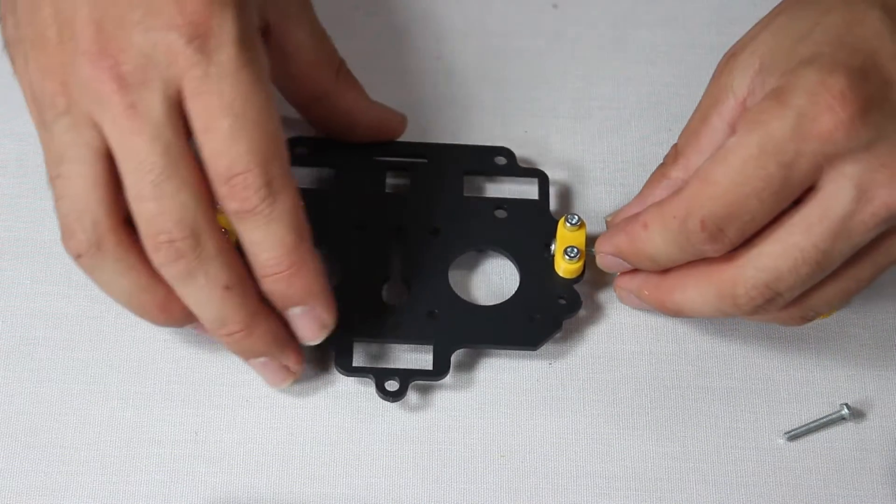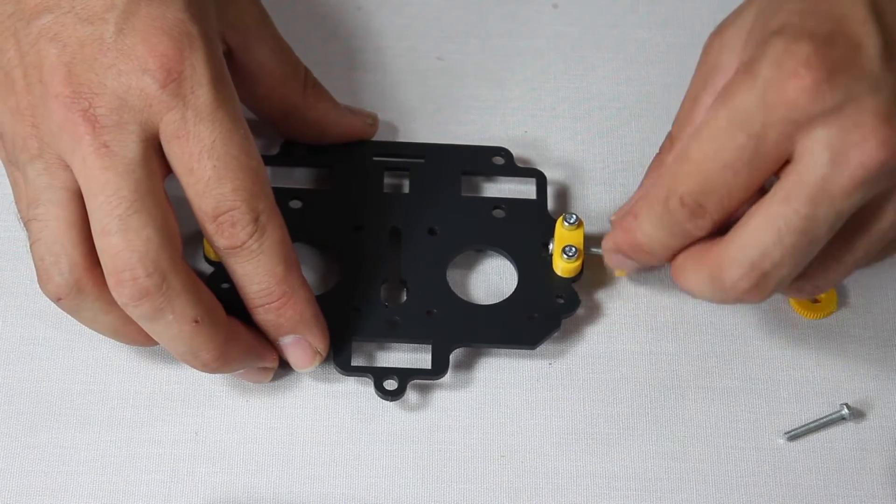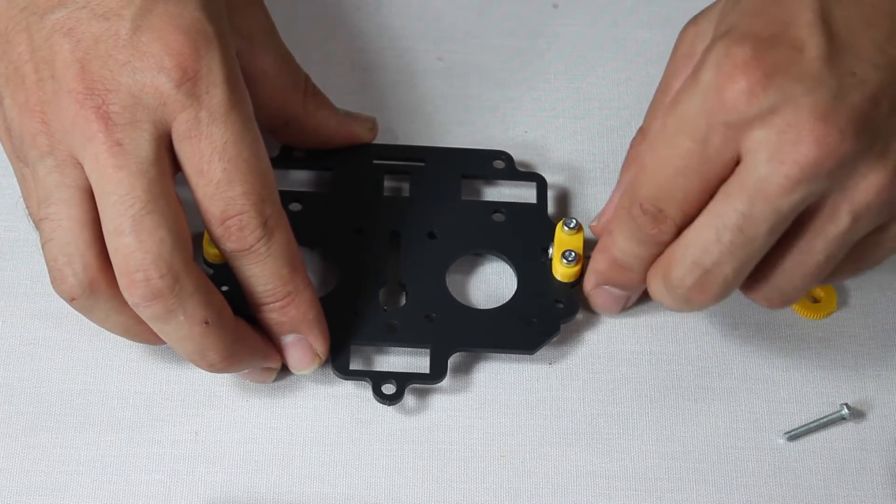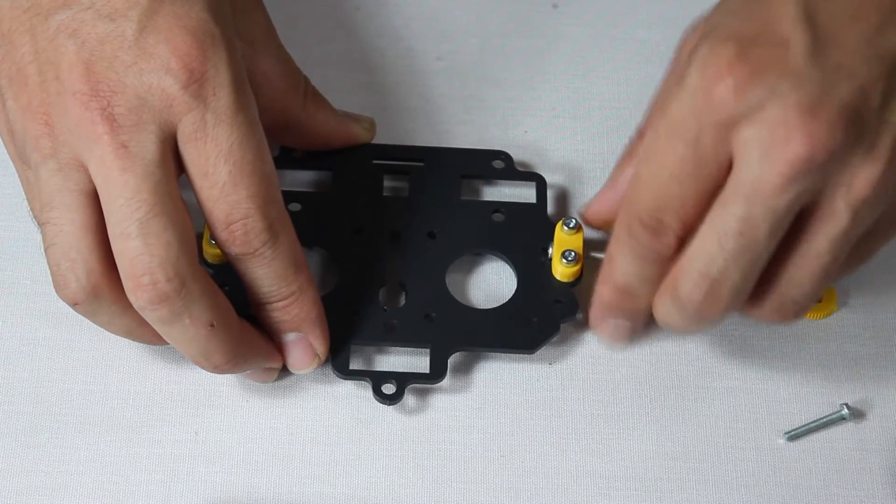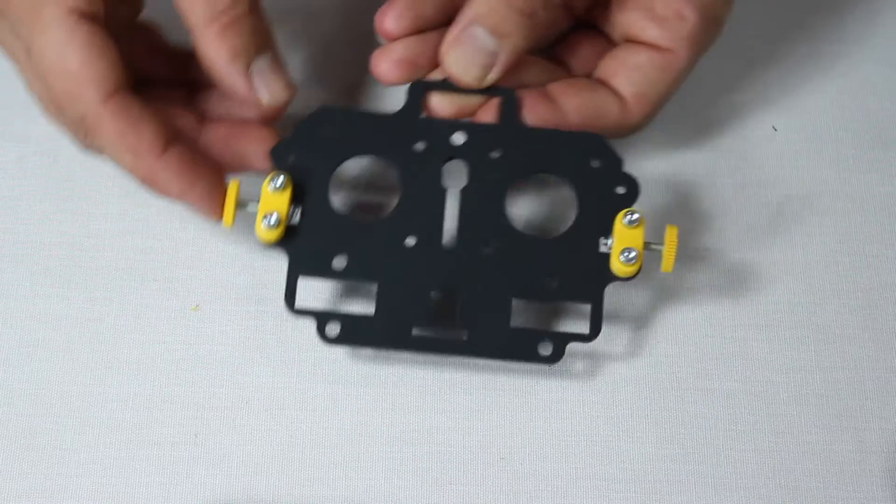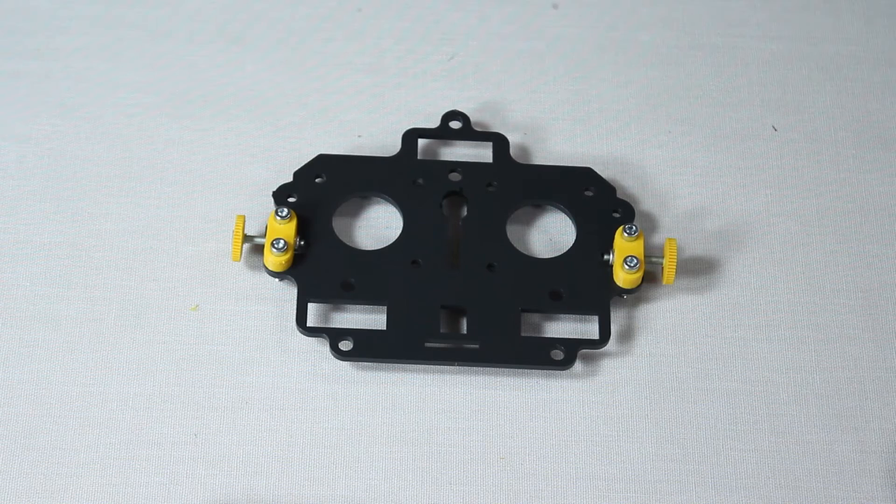Next, screw the bolts with the cogs into the nuts you placed in the printed parts earlier on. There's no need to use tools, you can do it with your fingers. Screw in until the tip of the bolt thread appears, as you see here.